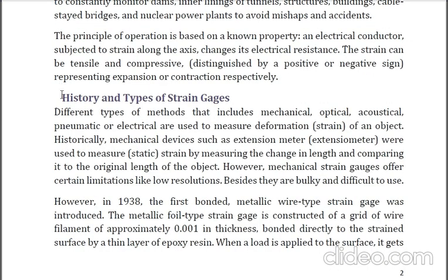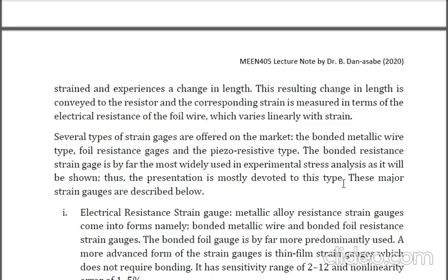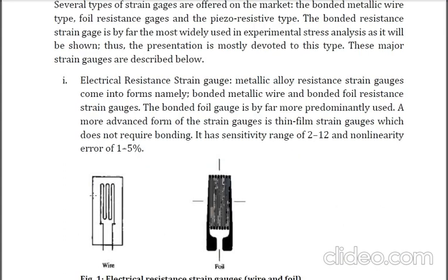Our second topic is history and types of strain gauges. Historically, different types of methods — including mechanical, optical, acoustical, pneumatic, or electrical — are used to measure deformation. In 1938, the first bonded metallic wire type strain gauge was introduced, and over time several types of strain gauges have been used in the market. The first major type is the electrical resistance strain gauge. Here we have two types: the wire type and the foil type resistance strain gauge.